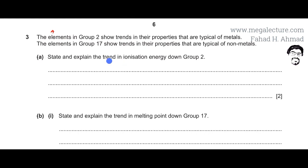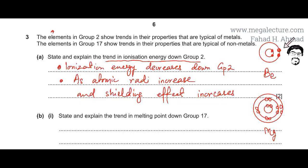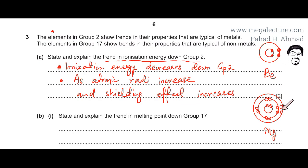We are talking about removing electrons, so we have to discuss the trend in ionization energies down group 2. I've drawn the example of beryllium and magnesium. As you move down the group, the number of valence electrons remains the same, but the number of shells keeps increasing.